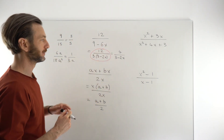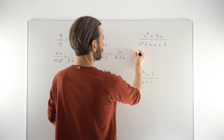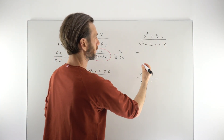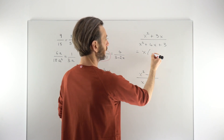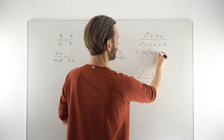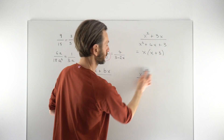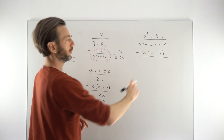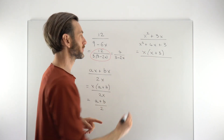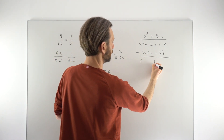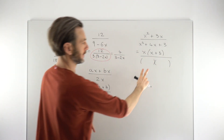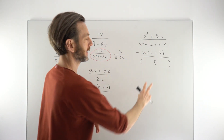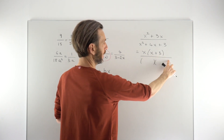Moving on to the slightly more complex ones — we're going to do the same thing, but we require different types of factorizing. The top line has got a common factor of x, so we use a common factor bracket: x(x plus 3). For the bottom line — the denominator — we've got a trinomial, so we need to factorize it into two brackets. One of the keys for these questions, especially with trinomials, is that we know something has to cancel, because these questions are designed so that something does. That tells us one of the brackets on the bottom is going to be the same as the bracket on the top.